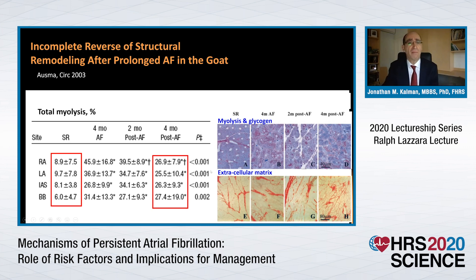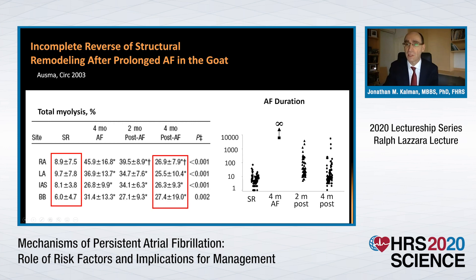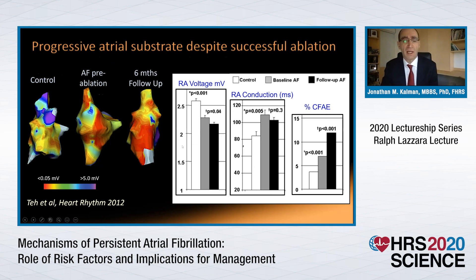However, animal studies have not necessarily borne this out. This comes from the group of Maurits-Alessi — a goat study in which goats were subjected to four months of atrial fibrillation. They developed significant myolysis, cell loss, glycogen accumulation, and interstitial fibrosis. But at four months following atrial fibrillation termination, this was not completely reversed. Myolysis remains, fibrosis remains, and this translates into increased AF duration still present at two and four months compared with baseline — incomplete reversal after four months of atrial fibrillation.